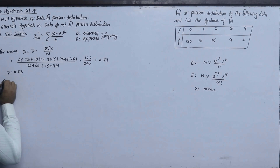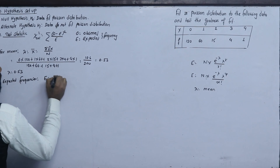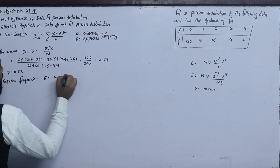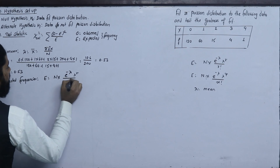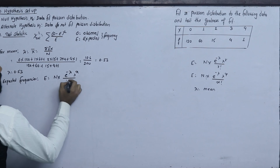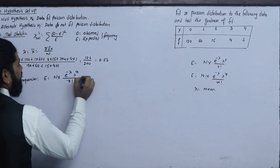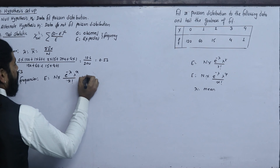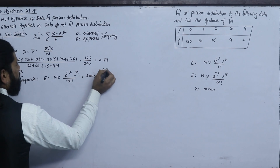For the expected frequency, the formula is: E equals n times e to the power minus lambda times lambda power x divided by x factorial. Substituting, E equals 200 times e to the power minus 0.53 times 0.53 power x divided by x factorial.